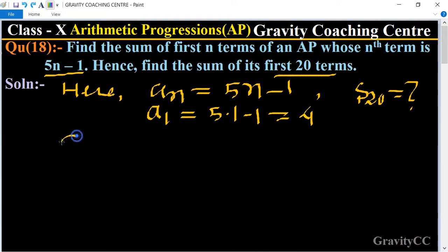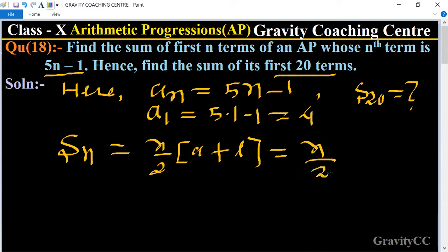We know that the formula of Sn equals n by 2 times (a plus last term). The last term is given as 5n minus 1, so we put here 5n minus 1. Now we find its S20 term.